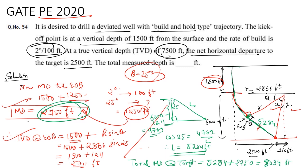This is how you get the measured depth at the target. My final answer is 8034 feet. Again, this is a very long numerical, but once you know the concept it will be very easy to solve this particular question.